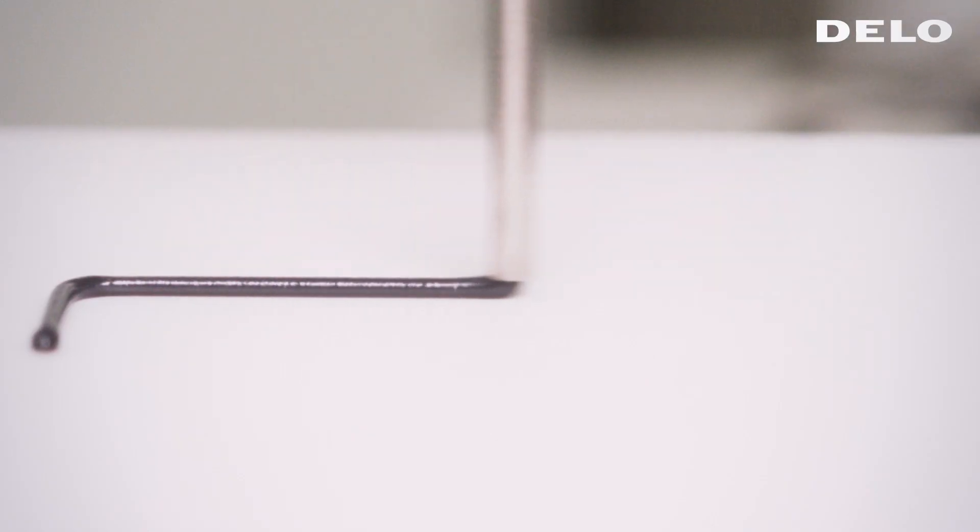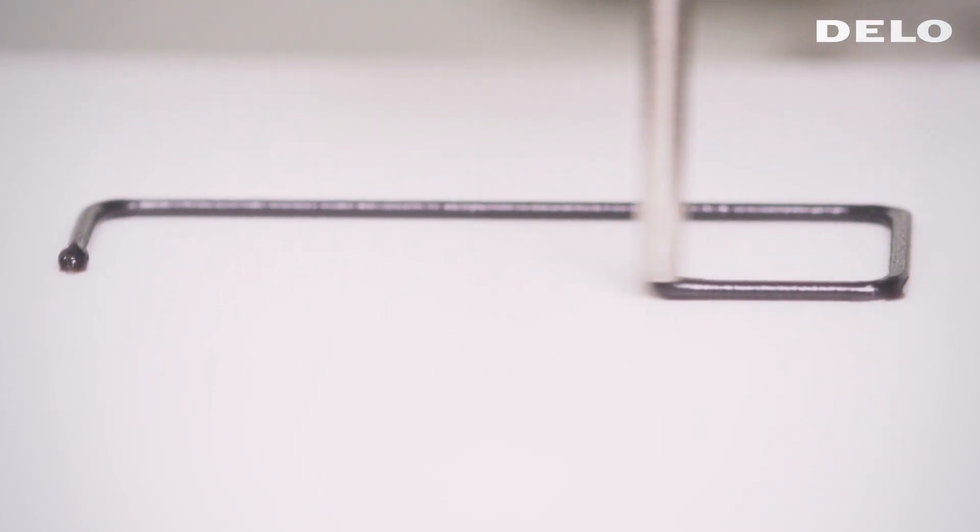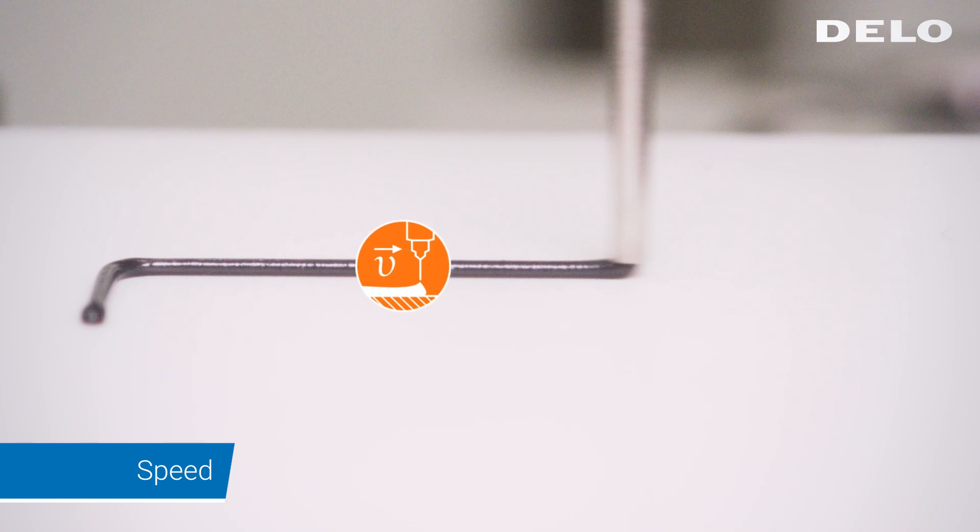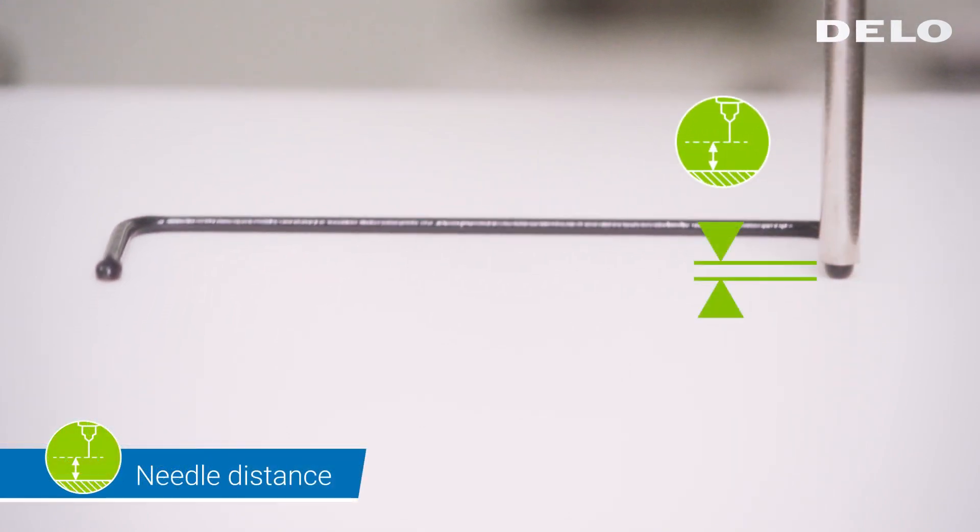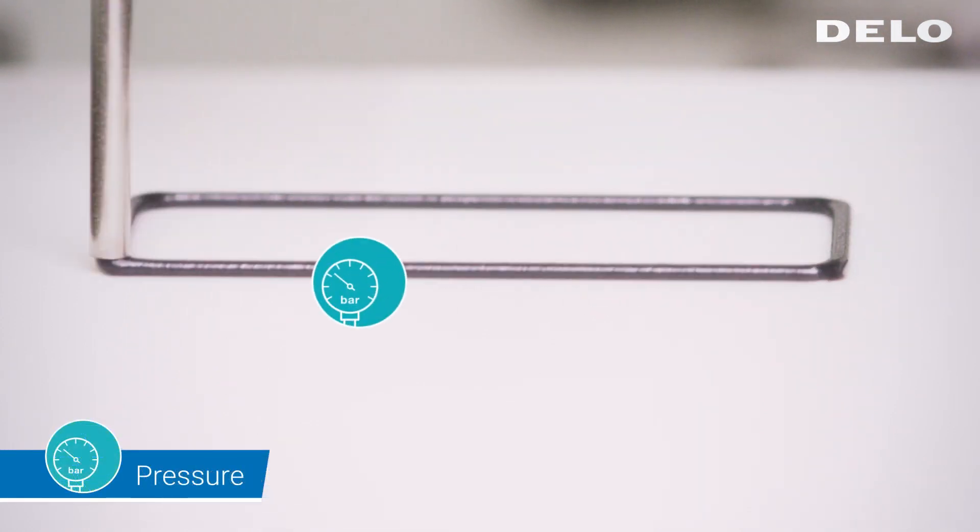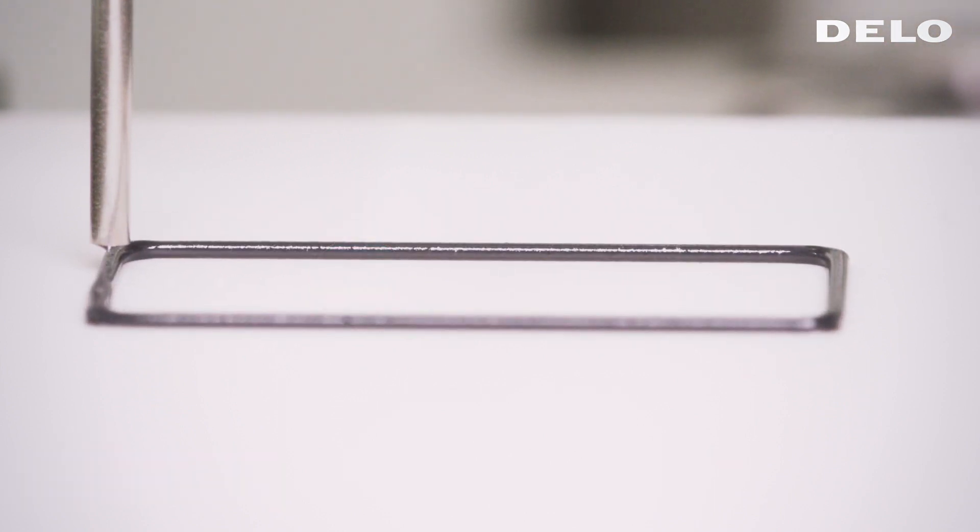An optimum dispensing result essentially depends on three parameters: the dispensing speed, the needle distance, and the dispensing pressure. To detect incorrect dispensing results, take a close look at the dispensing bead.